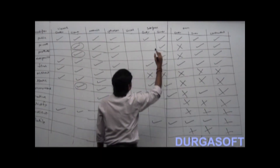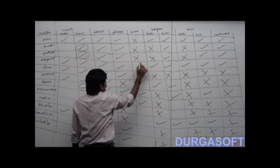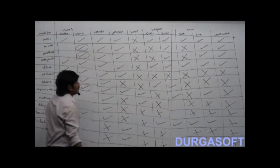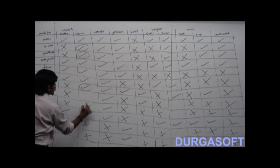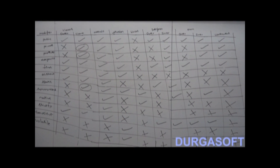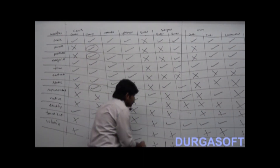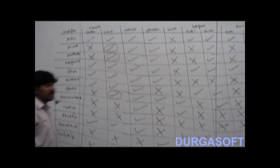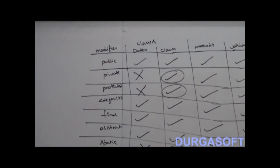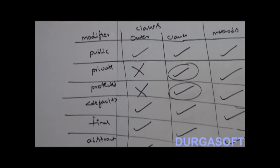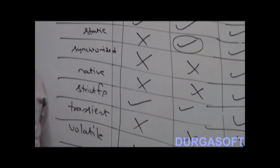These are the modifiers summary — where we can apply them. Take this table carefully. After completing this table, I will add some important conclusions.